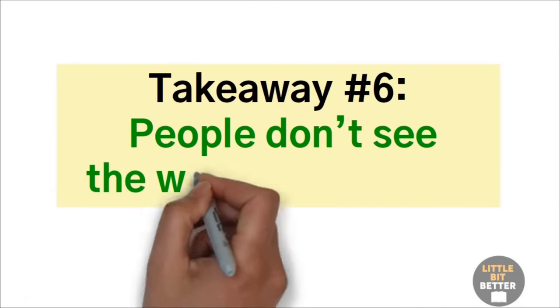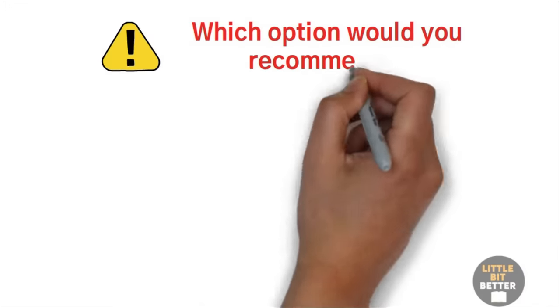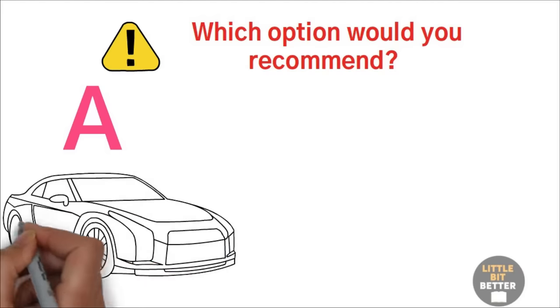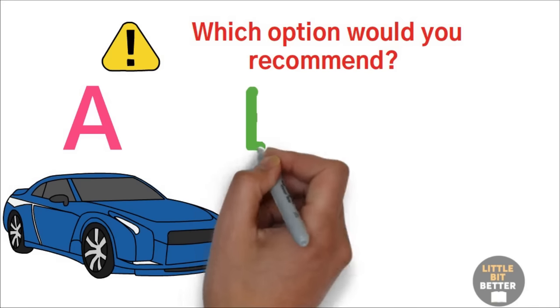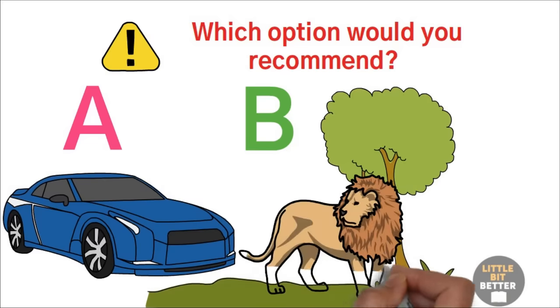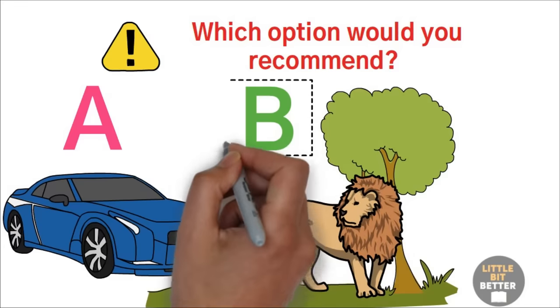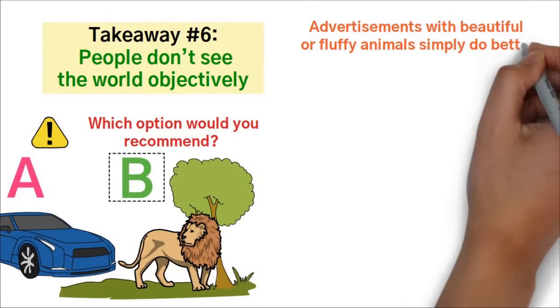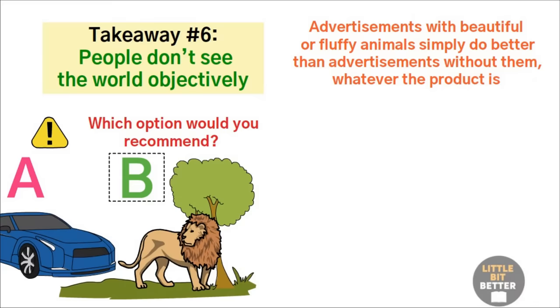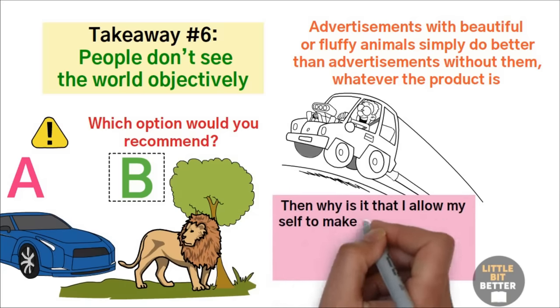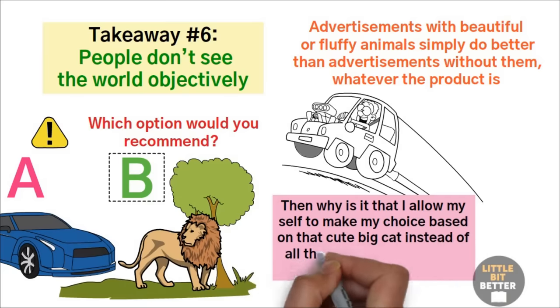Takeaway number six: people don't see the world objectively. I need to create an advertisement for a car, and I don't know which one to choose. Which option would you recommend? Option A is to create an ad that shows the car, shows how beautiful it is outside and how spacious it is inside, and talks about the powerful and fast engine and the comfortable seats. Option B shows the car racing along the African savannah side by side with a big cat, such as a lion. If you think option B will be more successful, you're probably right. And the reason is more simple than it looks. There's an animal in it. It's been proven that advertisements with beautiful or fluffy animals simply do better than advertisements without them, whatever the product is. Now, if I'm buying a car, I should probably take things like comfort, power, and space into consideration, then why is it that I allow myself to make my choice based on that cute big cat instead of all the objective features of the product?